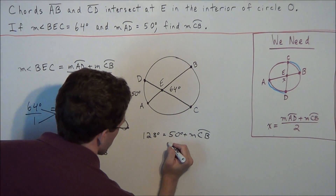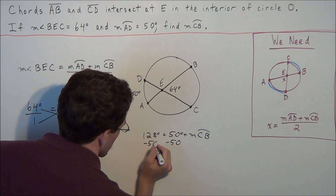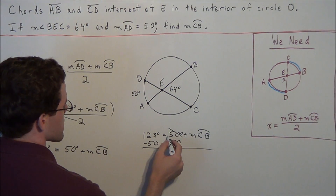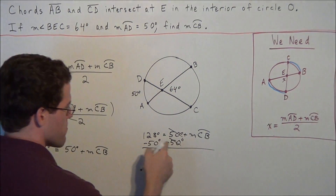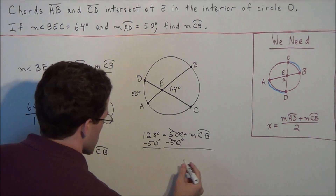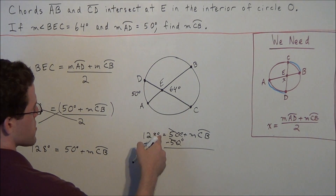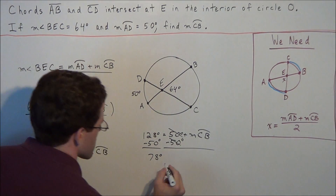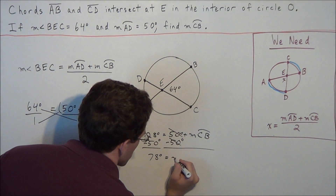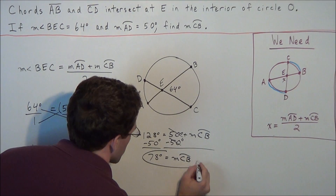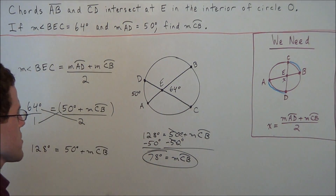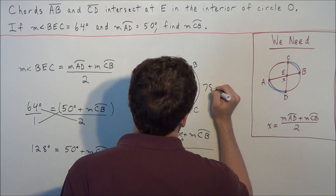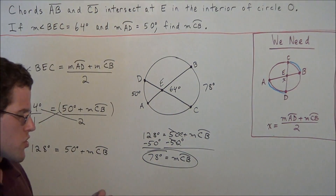We just need to subtract 50 from both sides of this equation. The 50 degrees cancels, and 128 degrees minus 50 degrees gives us 78 degrees. So 78 degrees is equal to the measure of arc CB. We can now label this on the circle diagram — the measure of arc CB is equal to 78 degrees.